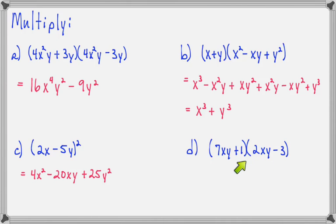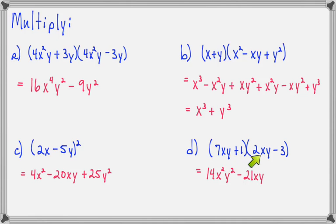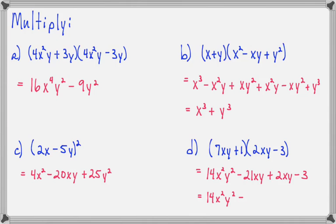On part D, this doesn't fit any of our shortcut methods, so we'll just use the FOIL method. 7xy times 2xy will be 14x squared y squared. 7xy times 3 will be minus 21xy. 1 times 2xy will be plus 2xy, and last times last will make minus 3. I do have like terms to combine in the middle: negative 21 plus 2 will be negative 19. So our final answer is 14x squared y squared minus 19xy minus 3.